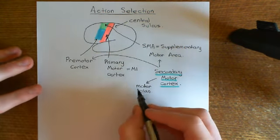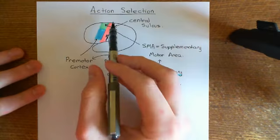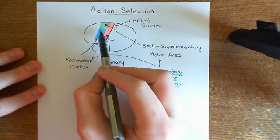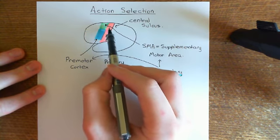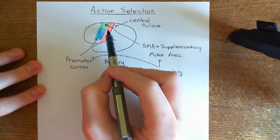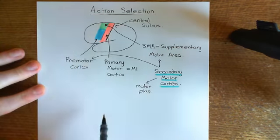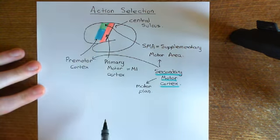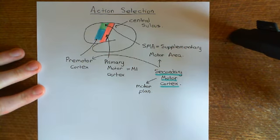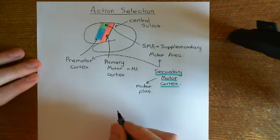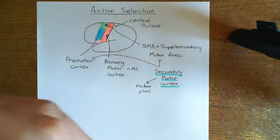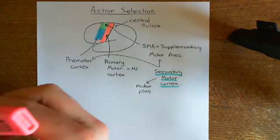The secondary motor cortex comes up with the incredible arrangement of action potentials needed to make the movement, then passes the motor plan onto the primary motor area. The primary motor cortex then relays it down to the spinal cord, and then you'll actually make that movement. There's one more area I want to add — going further forwards — an area in front of the secondary motor cortex, here in pink.